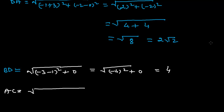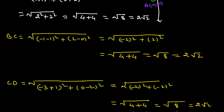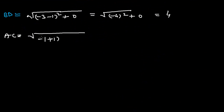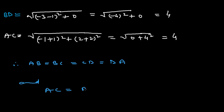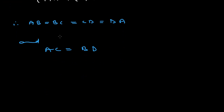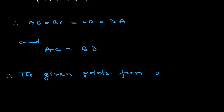Now we find the distance AC: it equals √((-1+1)² + (2+2)²) = √(0 + 4²) = √16 = 4. We conclude that all four sides are equal: AB = BC = CD = DA = 2√2, and both diagonals are equal: AC = BD = 4. This is the property of a square, therefore the given points form a square. Thank you.